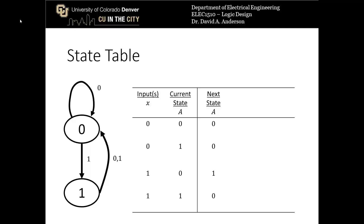Let's work on a very simple example of state machine design using an extremely simple state machine from the first lecture on this topic. It has a single state variable and a single input. To design this with JK flip-flops, we need in the state table the inputs J_A and K_A for the single JK flip-flop used in the state machine.